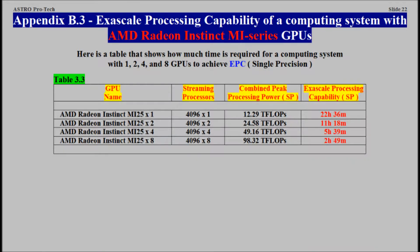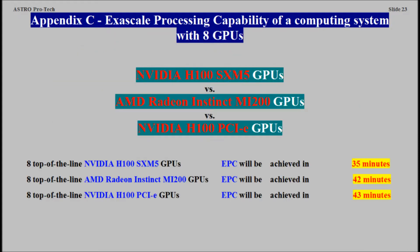Appendix B3: Exascale Processing Capability of a Computing System with AMD Radeon Instinct MI-Series GPUs. Appendix C: Exascale Processing Capability of a Computing System with 8 GPUs.